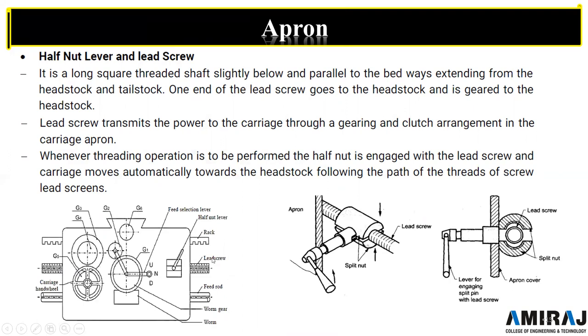To summarize the apron mechanism and the use of the split nut on the lead screw: there are three types of motions — one is the carriage hand wheel for the feed direction, then there is the feed selector with gear G6 for cross motion, and then there is the half nut for the thread cutting mechanism. That is it for today's lecture. Thank you very much for listening carefully. Have a nice day.